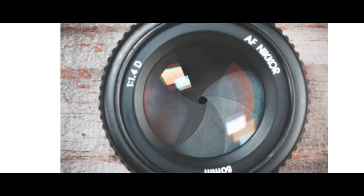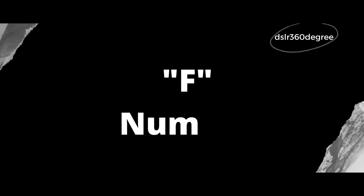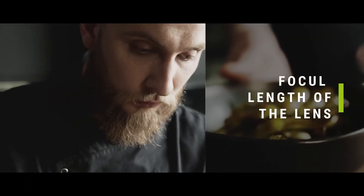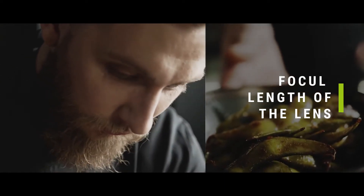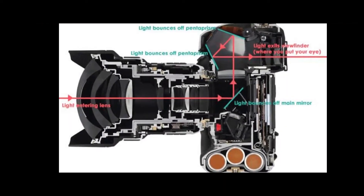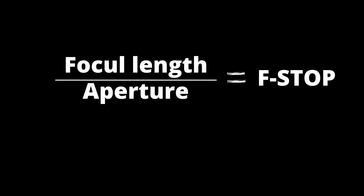Aperture numbers are represented by f-numbers. What is the f-number? The f stands for focal length of the lens, which relates to the space between the image sensor and the lens where the subject is focused.